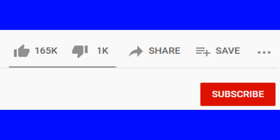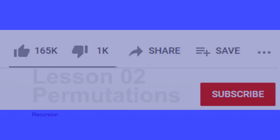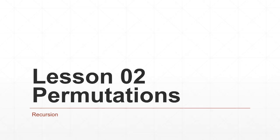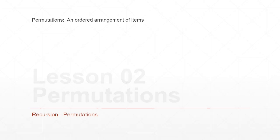Now let's get back to the video. Before we start, we have to define what permutations are. A permutation is an ordered arrangement of items. Order is the key — order matters.